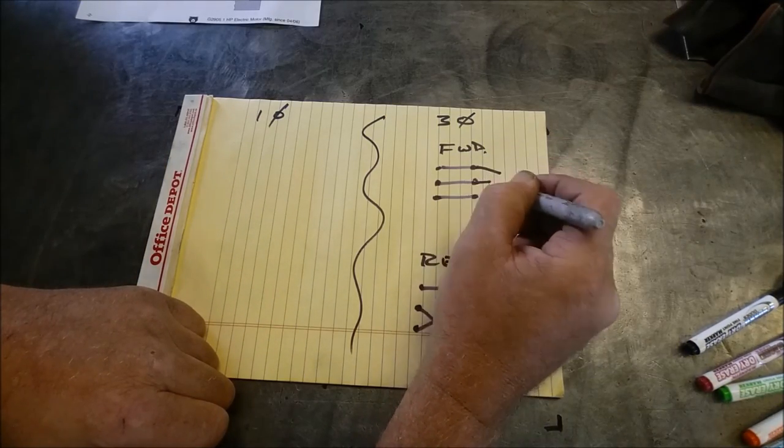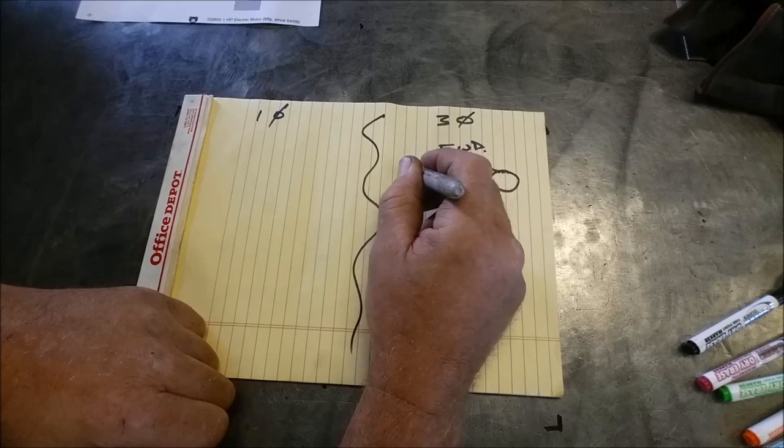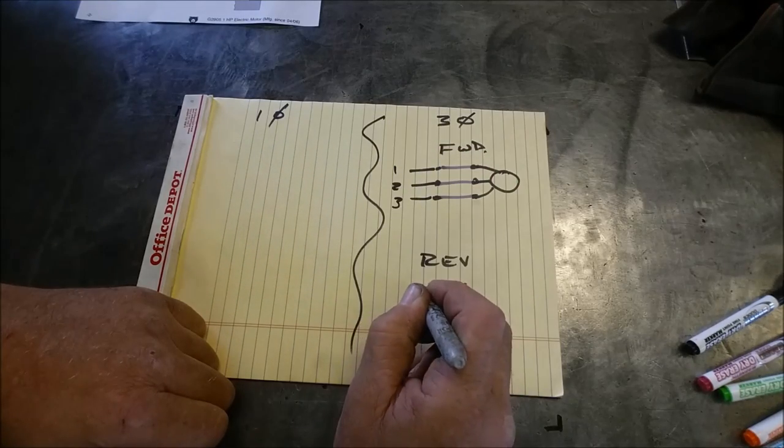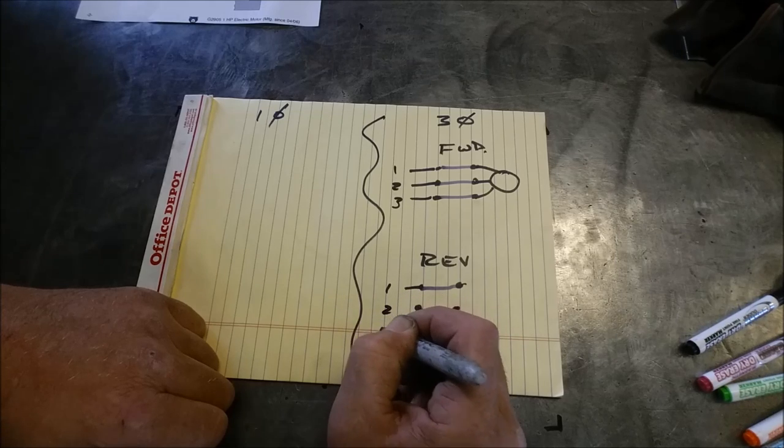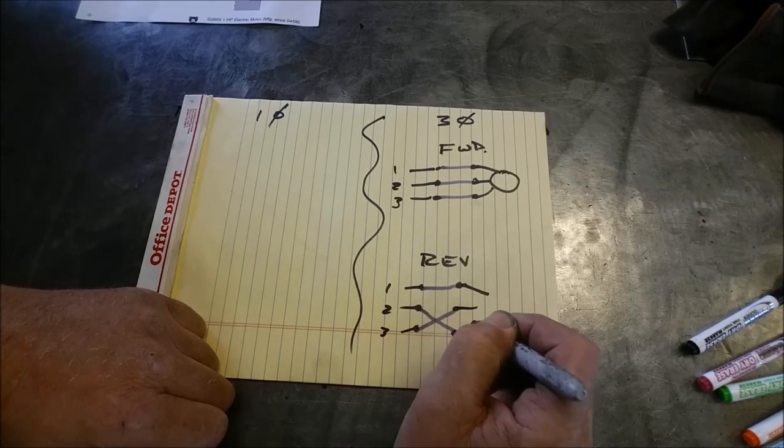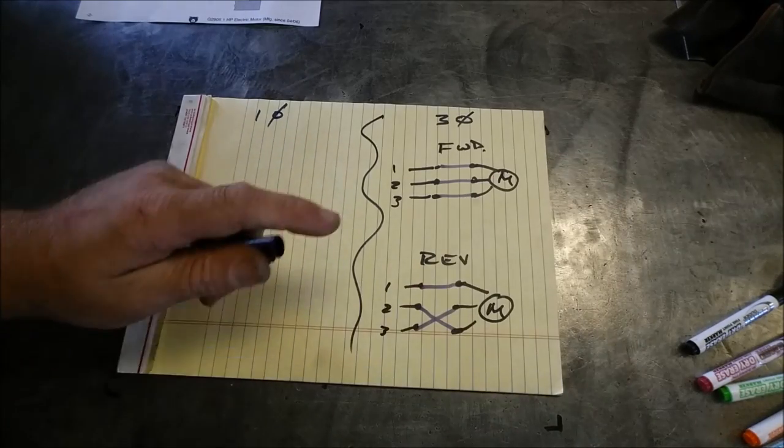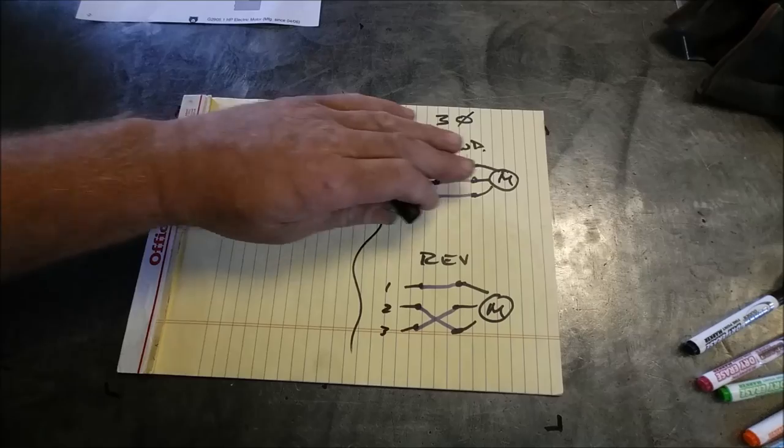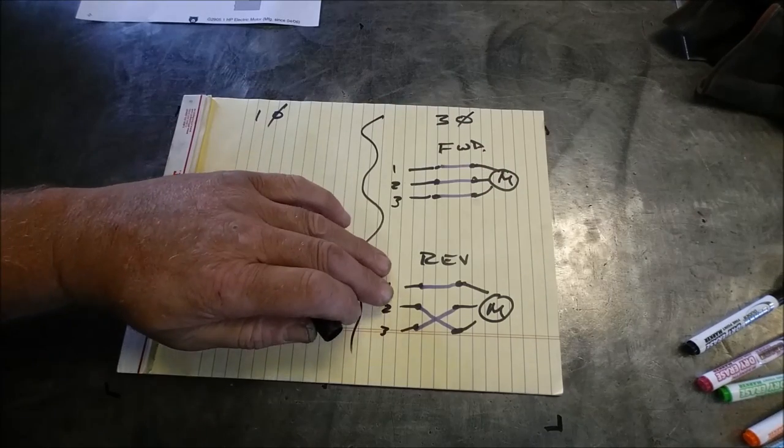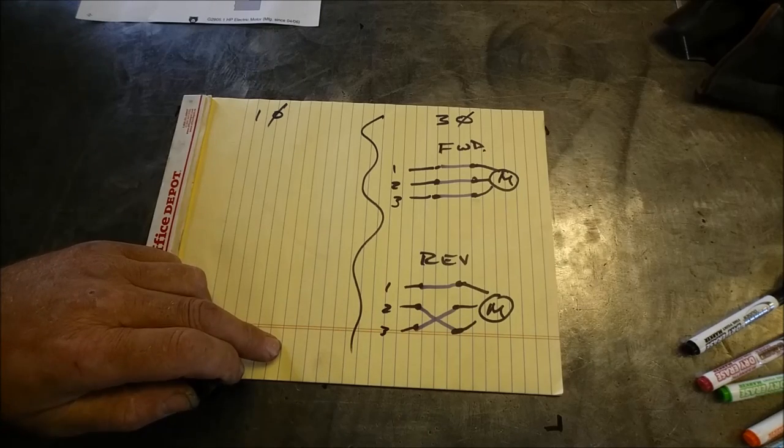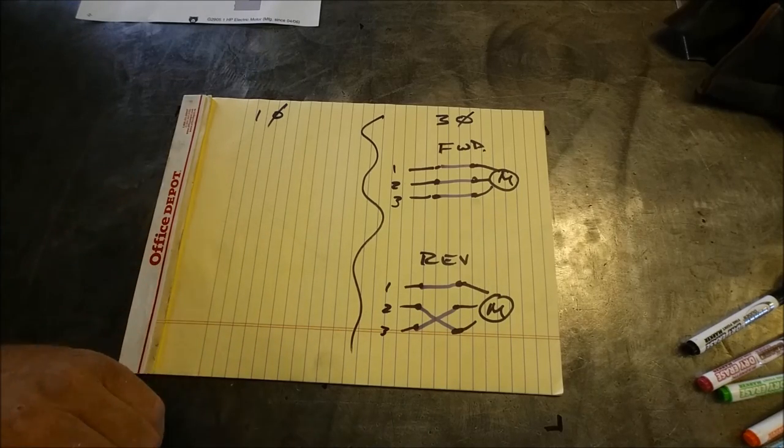This one you'd have your motor and your lines, so you'd have one, two, and three and one, two, and three here to your motor. All that does is in the forward run position sends all three phases through. In the reverse position it flips two and three and makes the motor run backwards. Really, really simple.